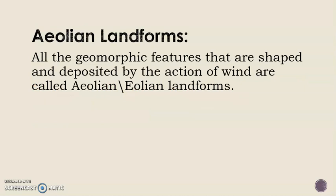All the geomorphological features that are shaped and deposited by the action of wind are called aeolian landforms. Wind erosion manifests itself in three forms: abrasion — the natural sandblast action of windblown material; deflation — the lifting and removal of loose material; and attrition — the mutual wear of particles carried along by the wind.